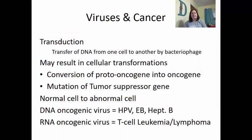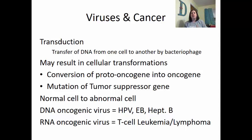Viruses are often linked to some types of cancers. This is due to the process of transduction — the transfer of DNA from one cell to another by the use of a bacteriophage — which may result in cellular transformations. This can convert proto-oncogenes into oncogenes, turning precursor cancer genes into actual cancer genes. Mutations in tumor suppressor genes can also be a problem, causing those genes to turn off so that tumors are not suppressed and cells start dividing uncontrollably. Some DNA oncogenic viruses include HPV, Epstein-Barr virus, and hepatitis B. Some RNA oncogenic viruses can trigger T-cell leukemias and lymphoma.